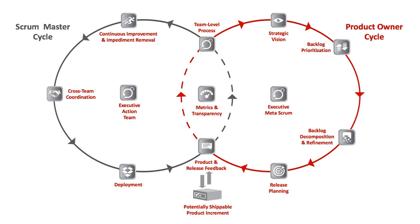Definition of Scrum at Scale: Scrum is a framework within which people can address complex adaptive problems while productively and creatively delivering products of the highest possible value. The Scrum Guide is the minimal feature set that allows inspection and adaptability via radical transparency to drive innovation, customer satisfaction, performance, and team happiness. Scrum at Scale is a framework within which networks of Scrum teams operating consistently with the Scrum Guide can address complex adaptive problems while creatively delivering products of the highest possible value. These products may be hardware, software, complex integrated systems, processes, services, etc. Scrum at Scale is lightweight — the minimum viable bureaucracy — simple to understand, but difficult to master.